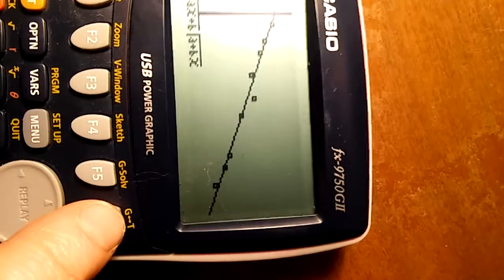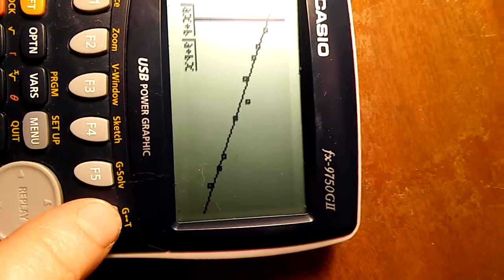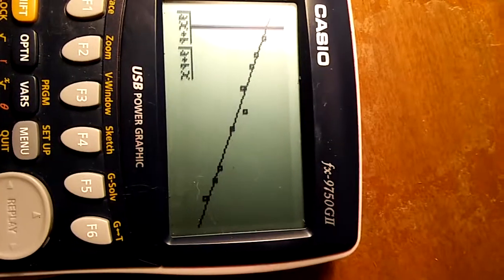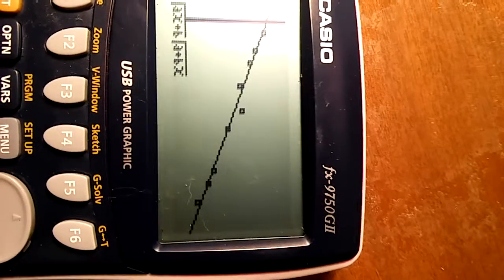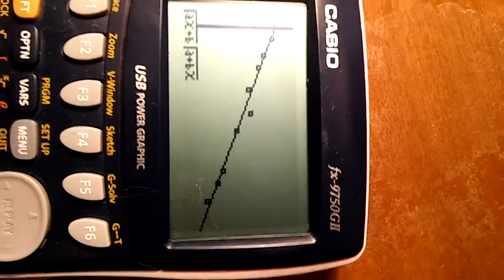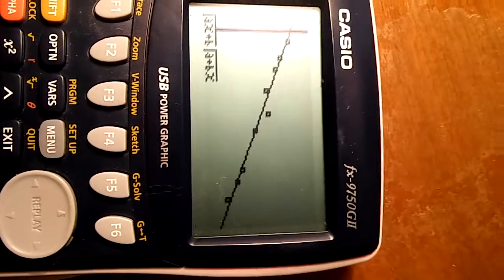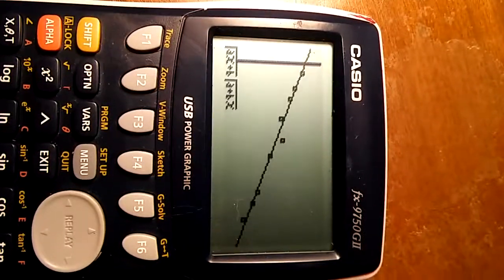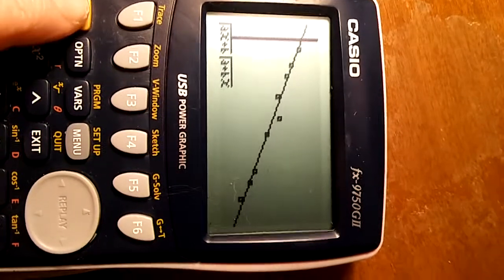The distance between the data points and the line, if we remember from previous videos, that distance is called a residual. If you want to see what those residuals are, there is a way. Press shift menu.